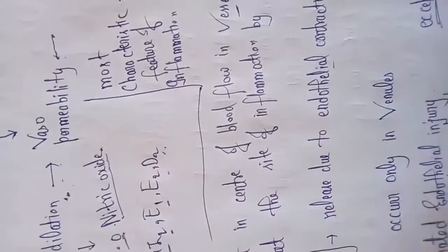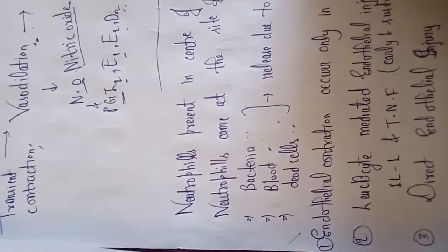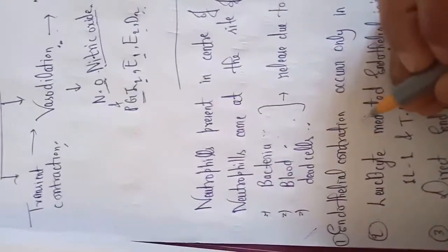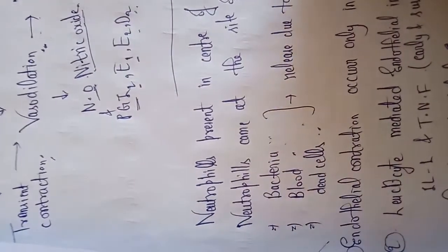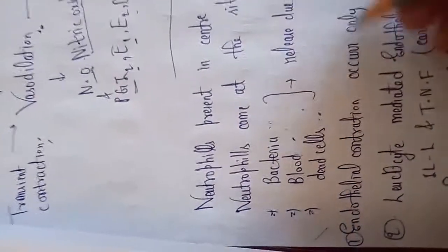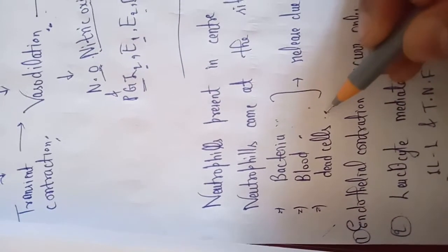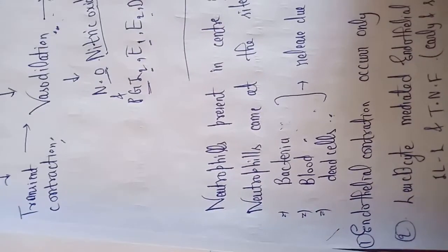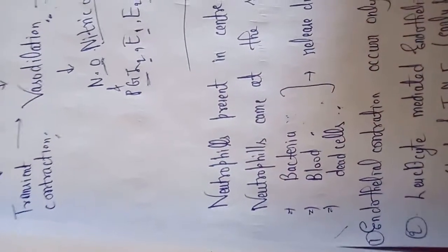Endothelial contraction occurs in response to inflammation signals. Endothelial contraction takes place specifically in venules — it is limited to venules. Bacteria and chemicals from dead cells trigger this endothelial contraction in venules.